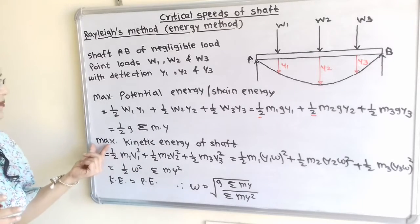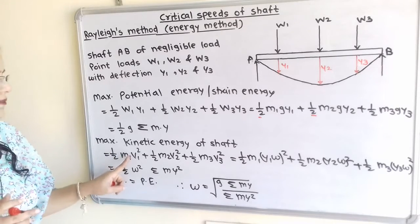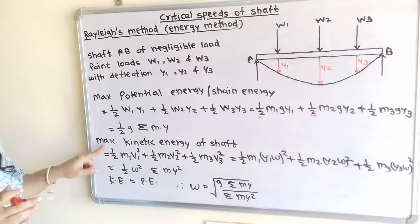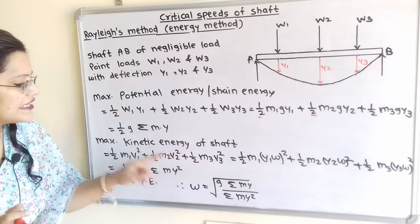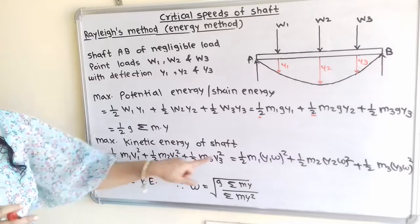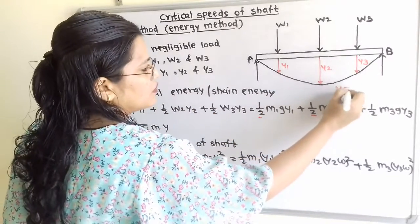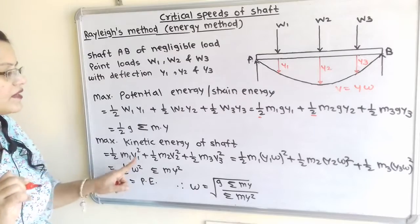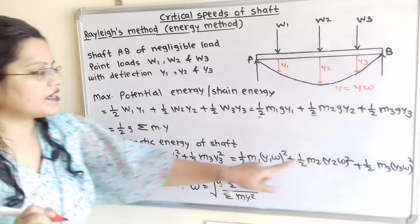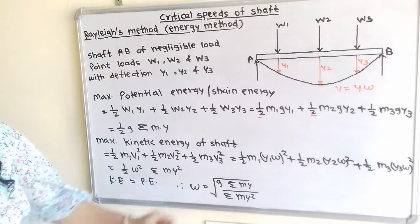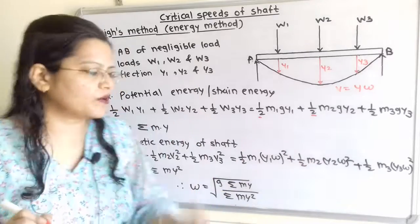Now we will move to maximum kinetic energy of the shaft. The formula is half multiplied by M multiplied by V squared. So we get half M1 V1 squared plus half M2 V2 squared plus half M3 V3 squared. Now velocity V is redefined as deflection Y multiplied by omega. So V1 equals Y1 omega, V2 equals Y2 omega, and V3 equals Y3 omega, where we take the whole bracket squared.